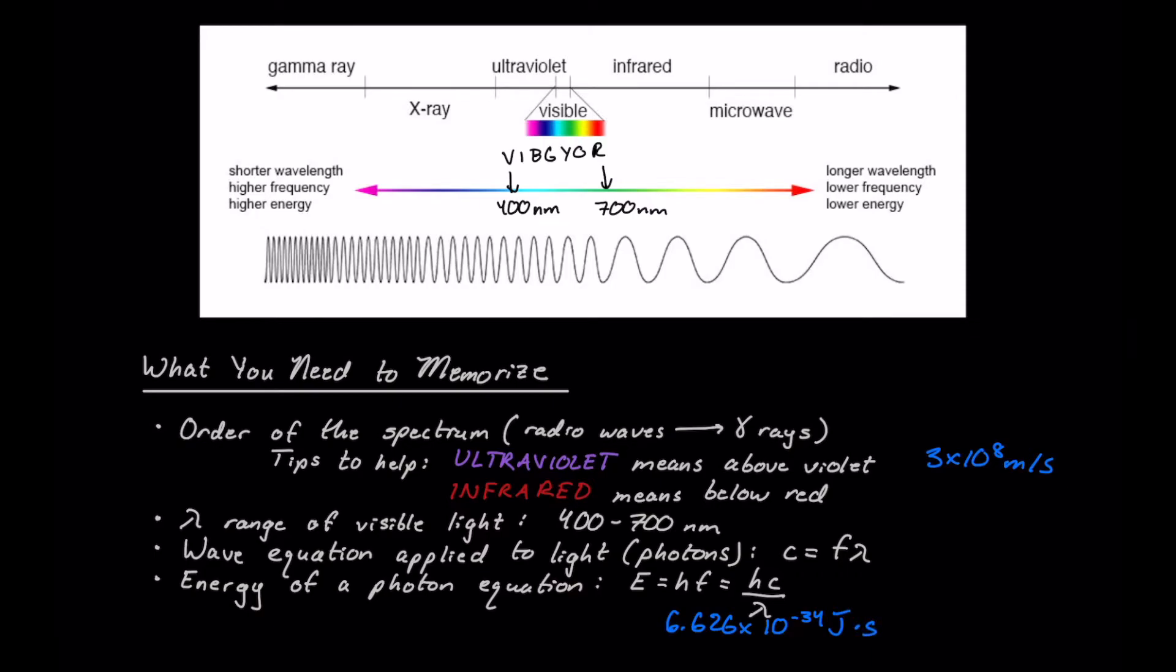Or we can rewrite this equation by rearranging this equation to get Hc over lambda. You can memorize this whole thing, or you could just memorize this part and then learn to substitute and rearrange this equation to substitute frequency for C over lambda here.